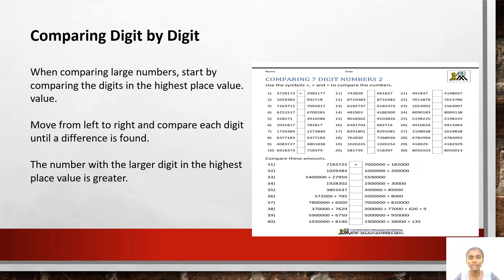When comparing large numbers digit by digit, start by comparing the digits in the highest place value. Move from left to right and compare each digit until a difference is found. The number with the larger digit in the highest place value is greater.